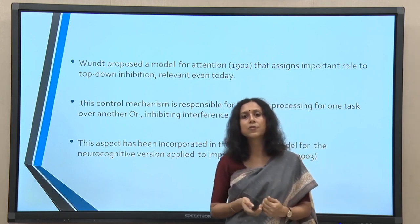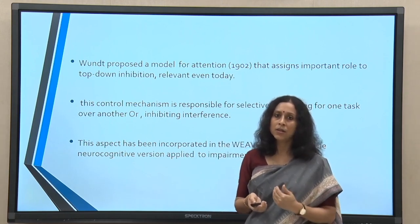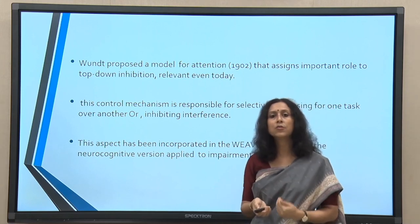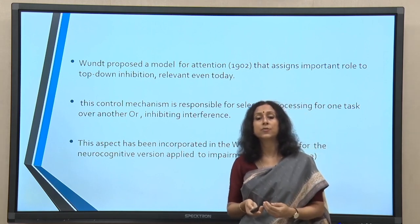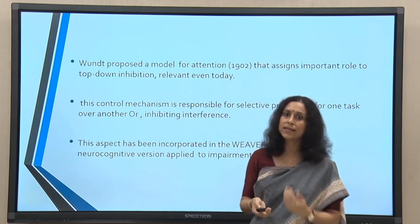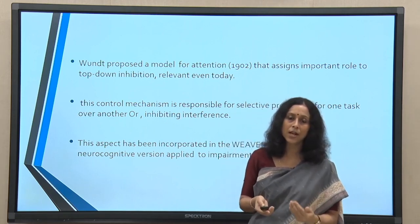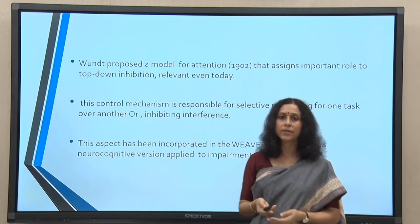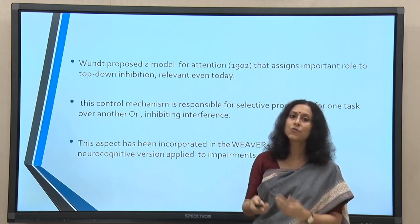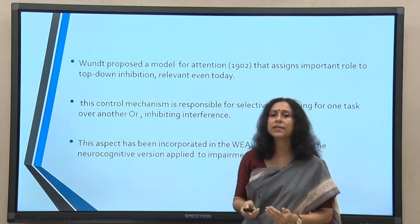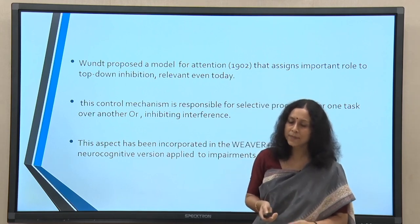Top-down refers to the goal-oriented behavior of an organism. If I want to learn about this course, I will pay attention to what the teacher is saying — that is top-down attention. I modulate my attentional mechanism gearing towards my goal at this given point of time. Similarly, a wildlife photographer trying to get a good shot of tiger cubs will focus attention only on that particular aspect of the scene, not attending to others. This is called top-down attention.